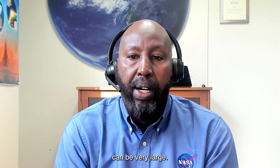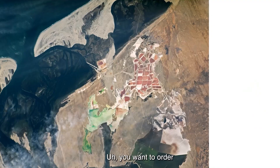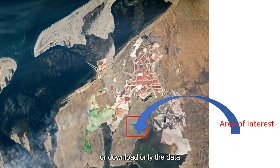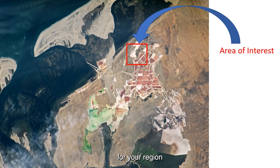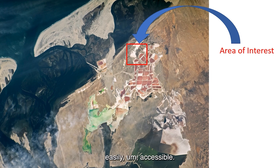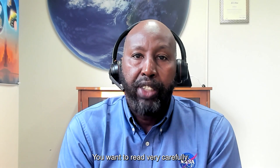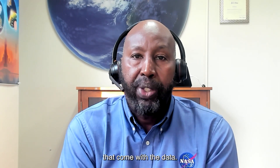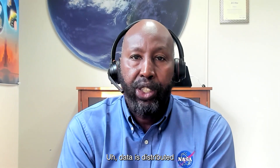Because NASA's data is vast, the volumes can be very large, and you want to order or download only the data for your region and your time to make it easily accessible — otherwise the data volume is too large. You also want to read very carefully the instructions that come with the data. Data is distributed by the distributed active archive centers.